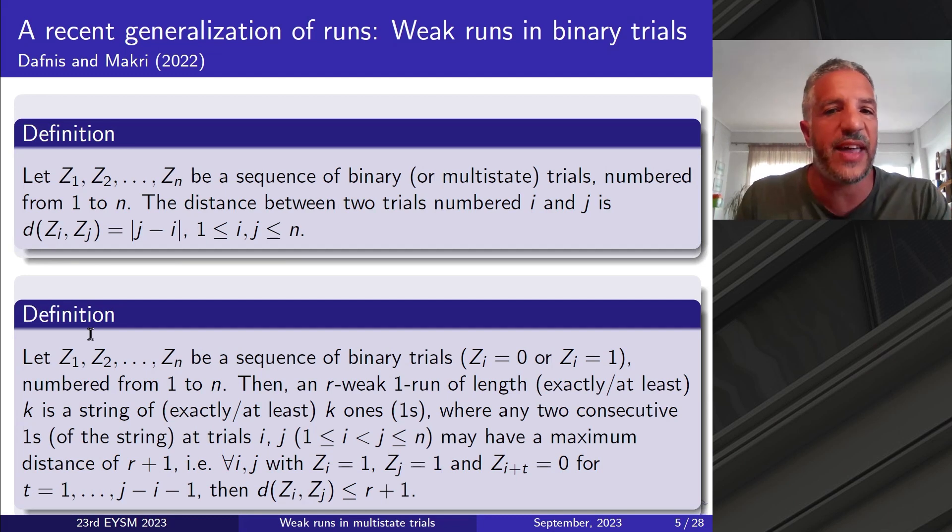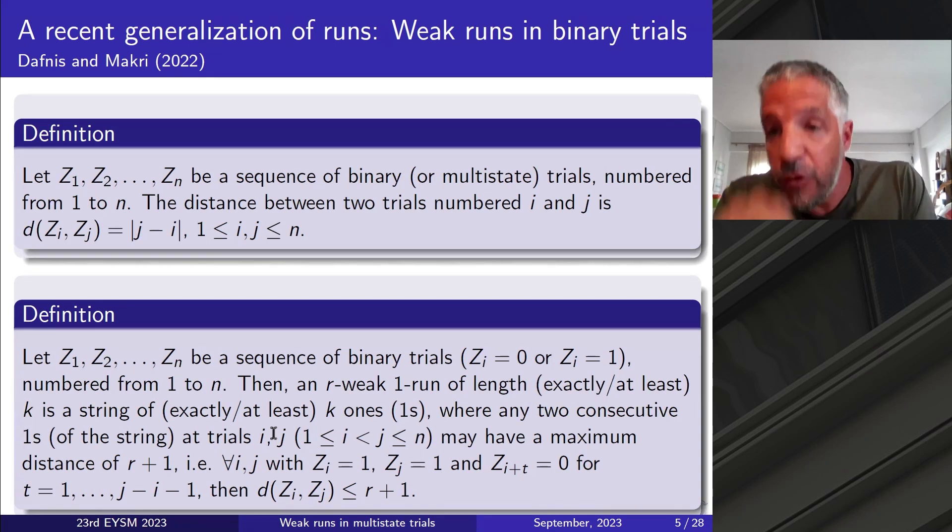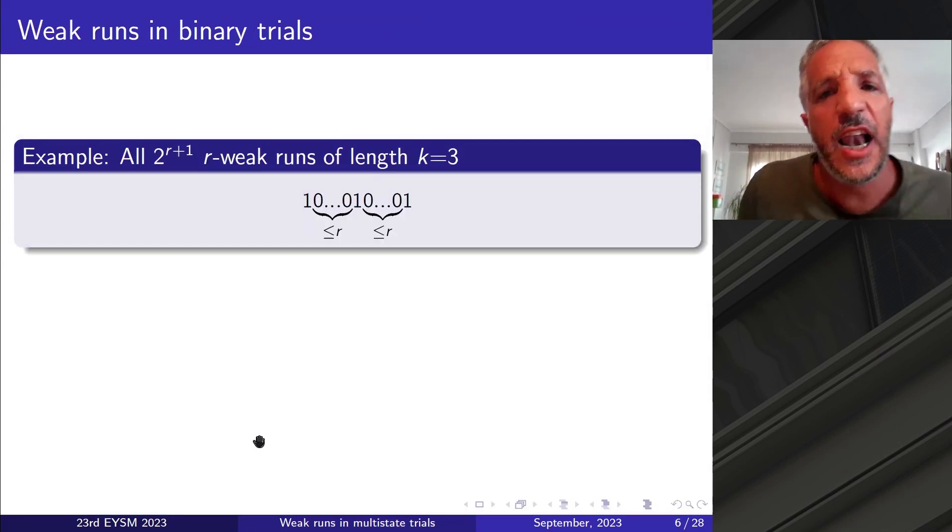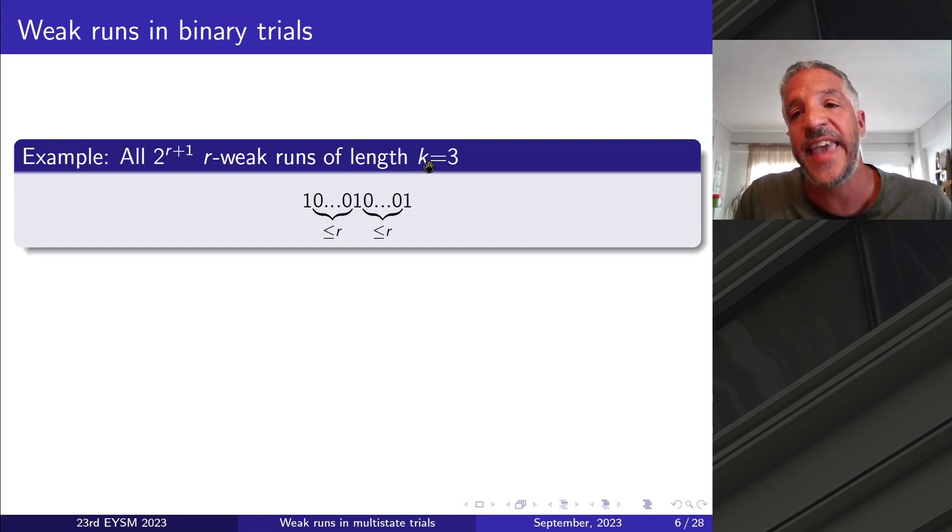So if we now have a sequence of binary trials, numbered from 1 to n, then an r-weak run of length k is a string of k ones, as in the k runs. But we have a further assumption that any two consecutive ones may have a maximum distance now of r plus 1, which means that between any two consecutive successes, r failures may now intervene. So runs are relaxed. If I want to give you an example, let me present you all r-weak runs of length k equal to 3. Then three successes, as you can see, three ones here may now be separated, and between any two successive of these, at most r failures, zeros, may intervene. So this is how the 2 to the power r plus 1 r-weak runs of length 3 are born.